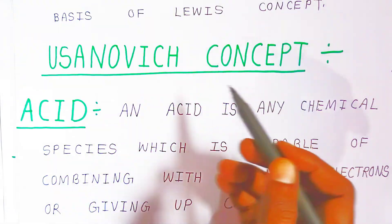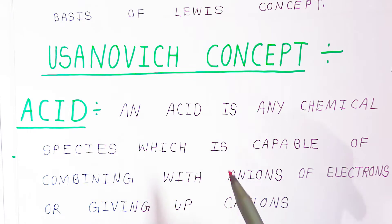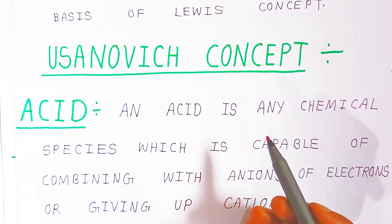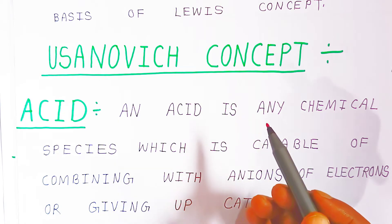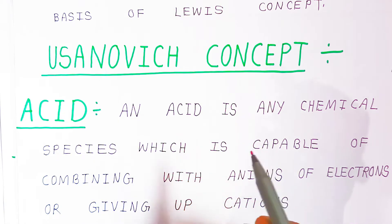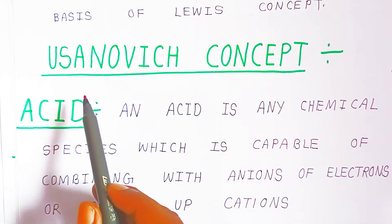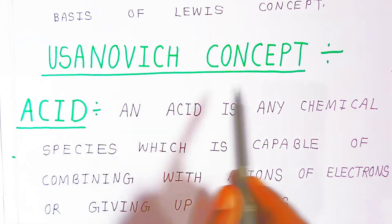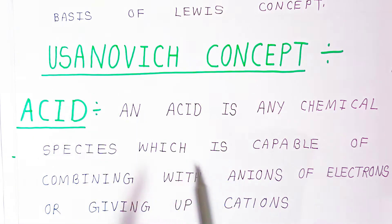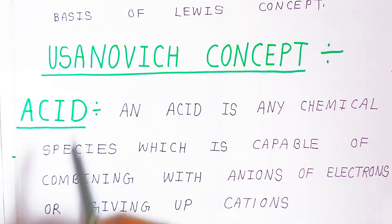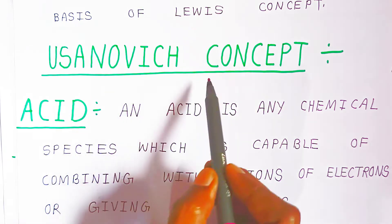The relative strength of acids and bases cannot be explained on the basis of the Lewis concept. These are the limitations of Lewis theory. To overcome these limitations, one more theory is introduced — that is called the Usanovich concept.